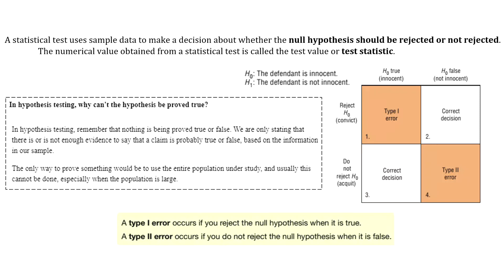After stating the hypotheses, the researcher will design the study and select the correct statistical test to carry out. The statistical test will use data collected from a random sample and will allow the researcher to make a decision about whether the null hypothesis should be rejected or not rejected.